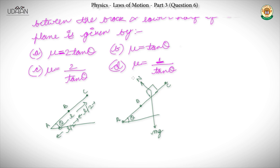Because this angle is θ, this angle will be 90 minus θ, and this angle will be θ. So our value will be Mg·cos θ perpendicular to the plane, and Mg·sin θ parallel to the inclined plane, which is the net force acting along the incline.